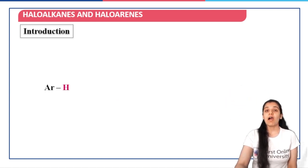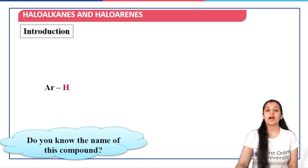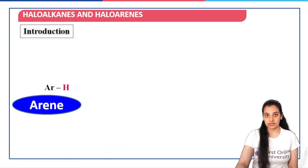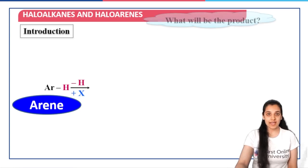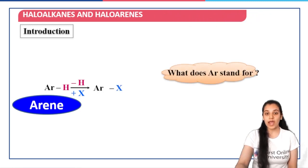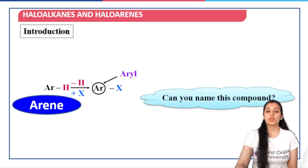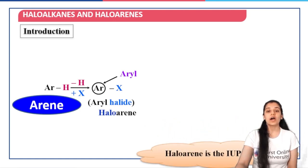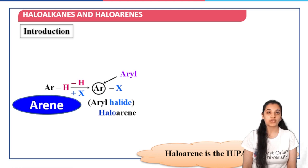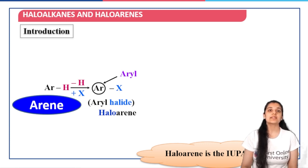Now, when I say ArH, here Ar is basically an aryl group — so this is basically an arene. When again the hydrogen is replaced by a halogen X, the product we get is ArX. This compound is called either aryl halide, which is the common name, or haloarene, which is the IUPAC name. So, when the halogen is attached to an aryl group such as benzene, we call it haloarene or commonly known as aryl halide.